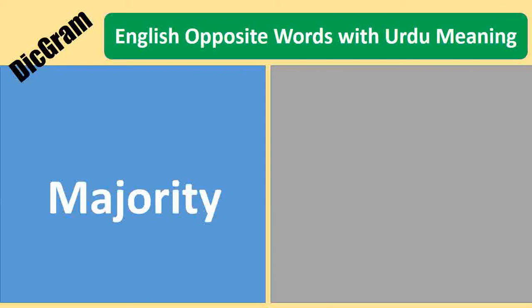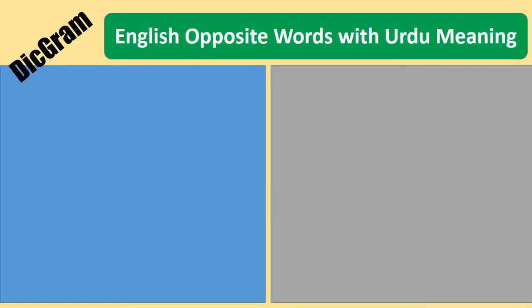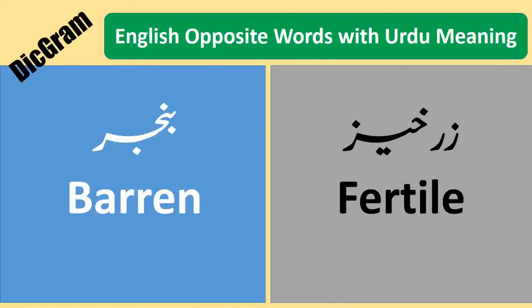Majority — Aksriyat. Minority — Akliyat. Barren — Banjar. Fertile — Zahez.